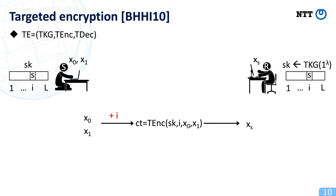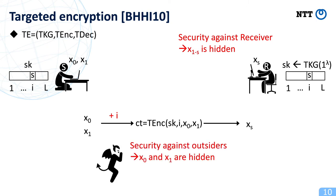Targeted encryption should satisfy two security notions. The first one is security against receiver, which guarantees that the ciphertext CT hides x_{1-S} even against the receiver holding the secret key. The second security notion is security against outsiders, which guarantees that the ciphertext CT hides both x0 and x1 against outside adversaries who do not have the secret key. So targeted encryption is a primitive similar to oblivious transfer, and thus is compatible with garbled circuit. Barak et al. showed that the combination of targeted encryption and garbled circuit implies bounded KDM-secure encryption scheme.